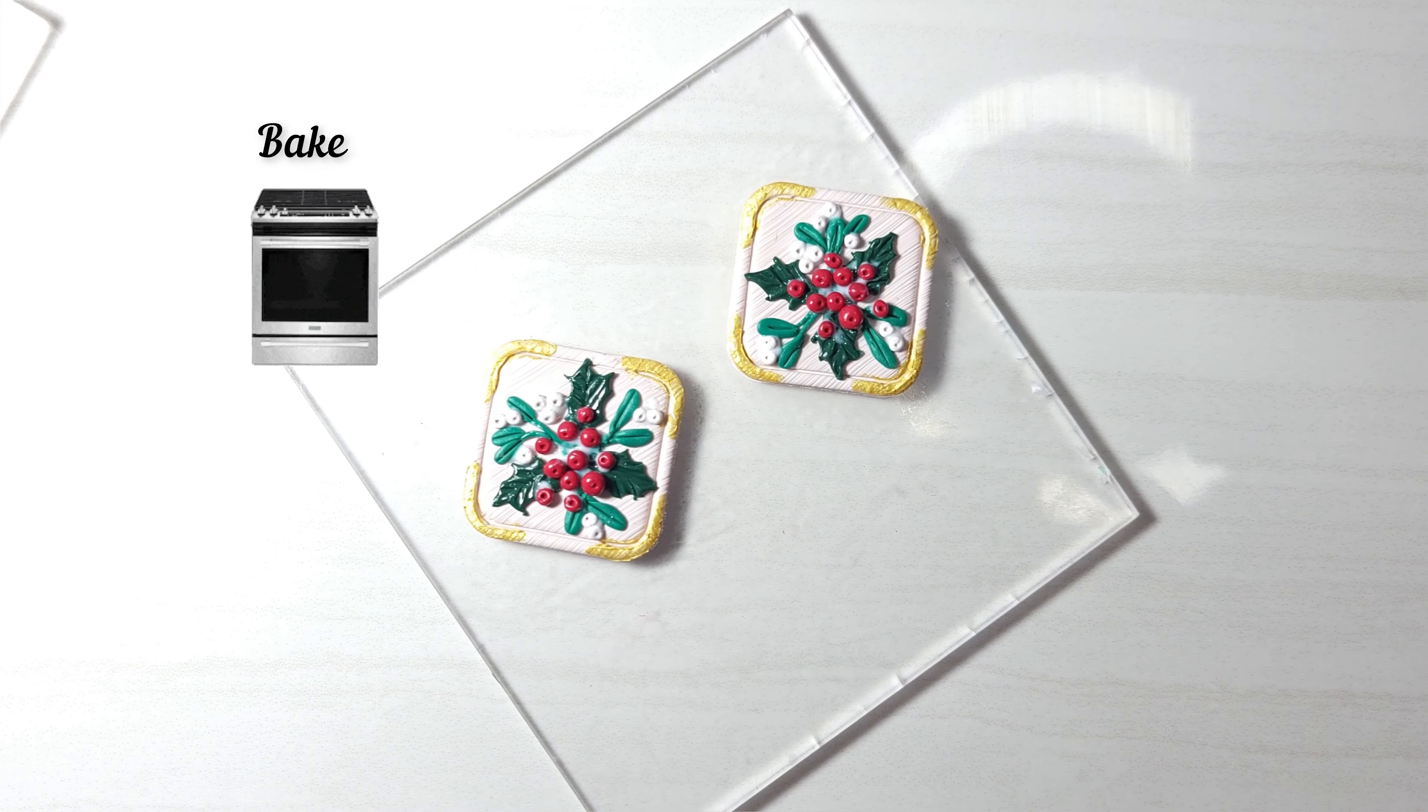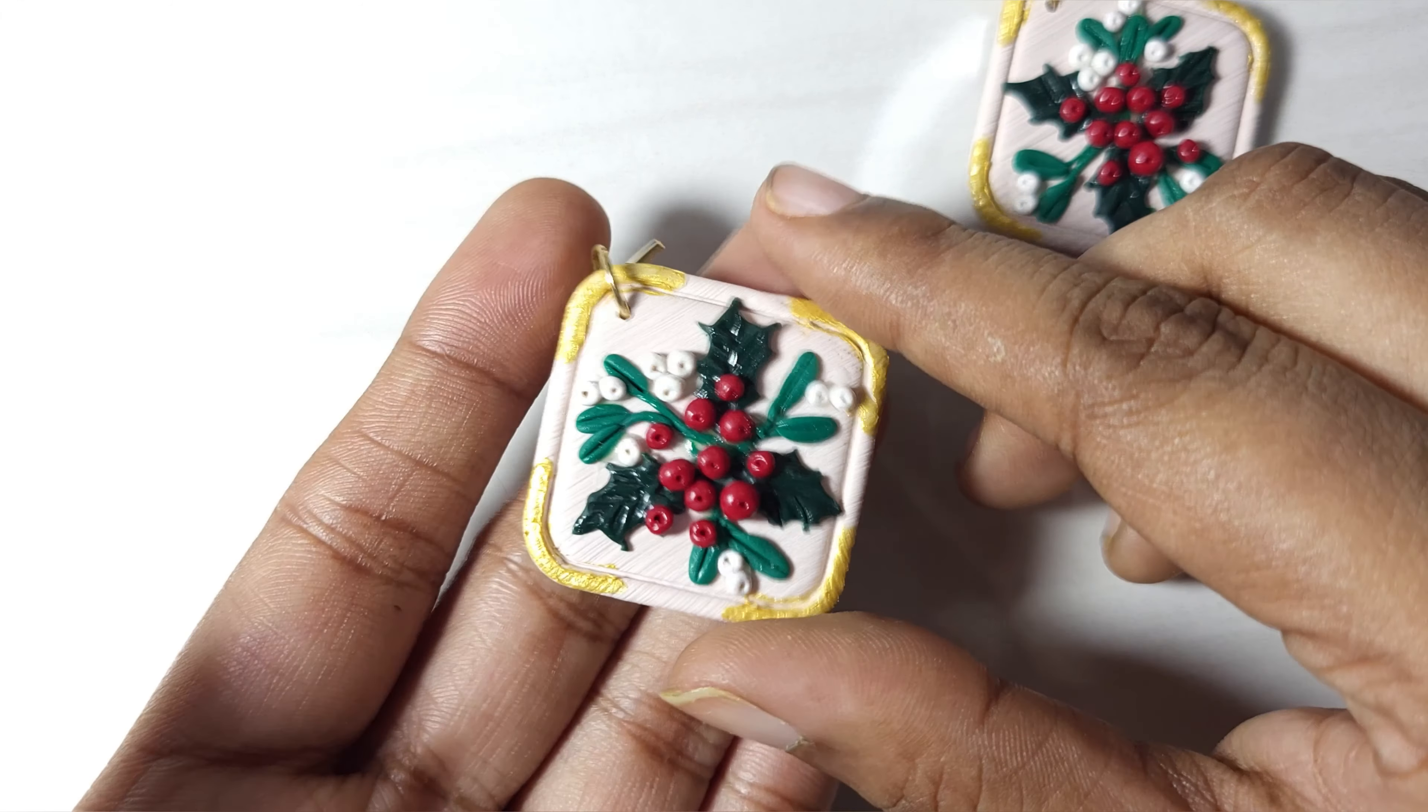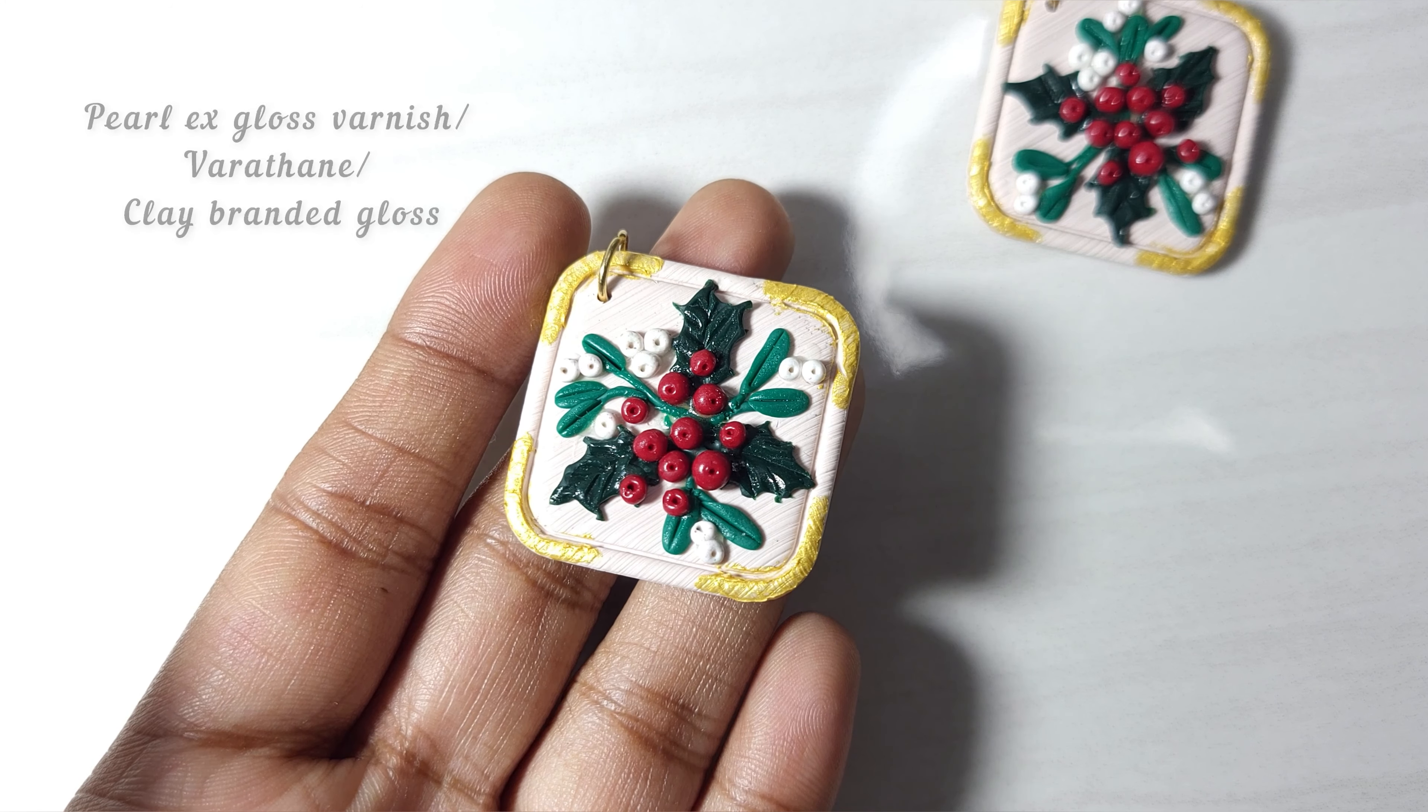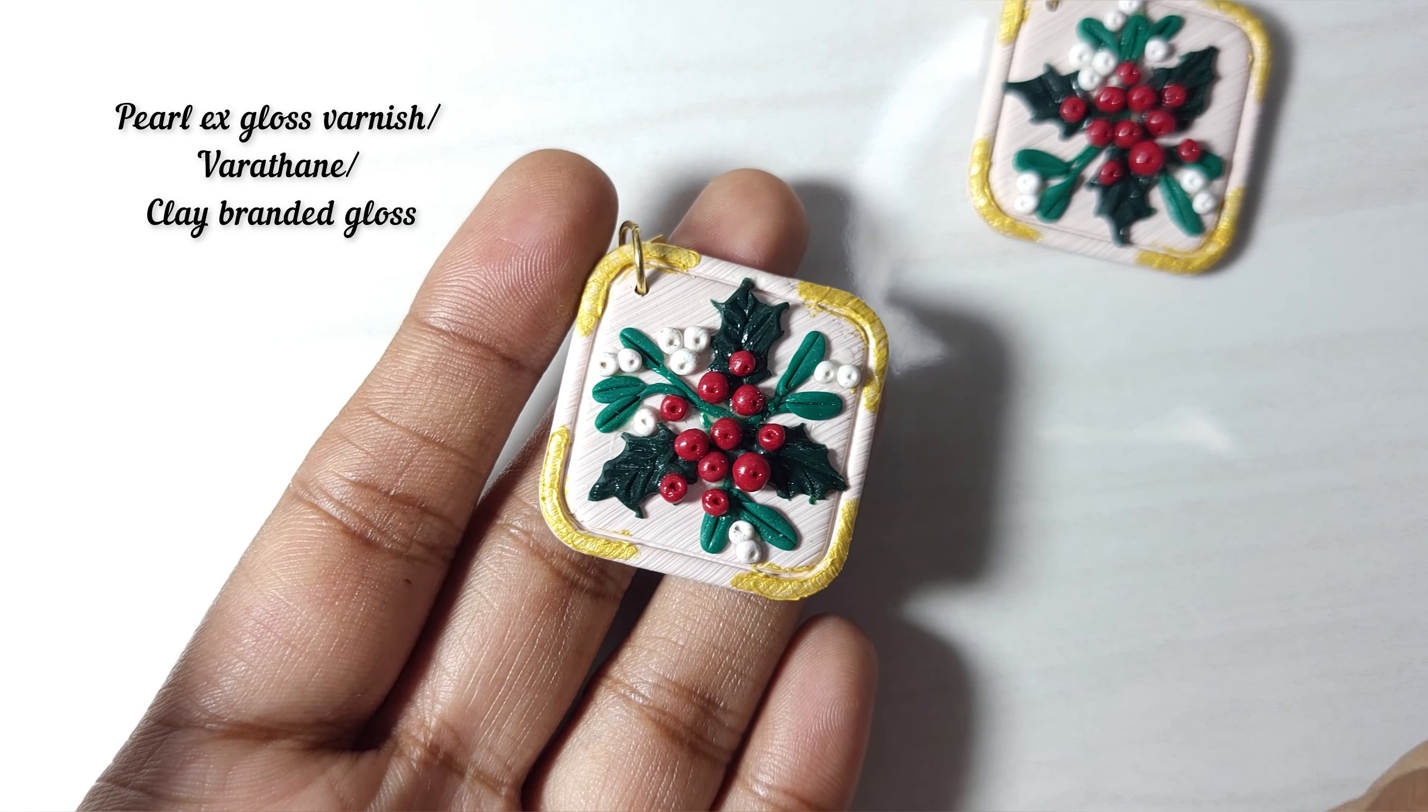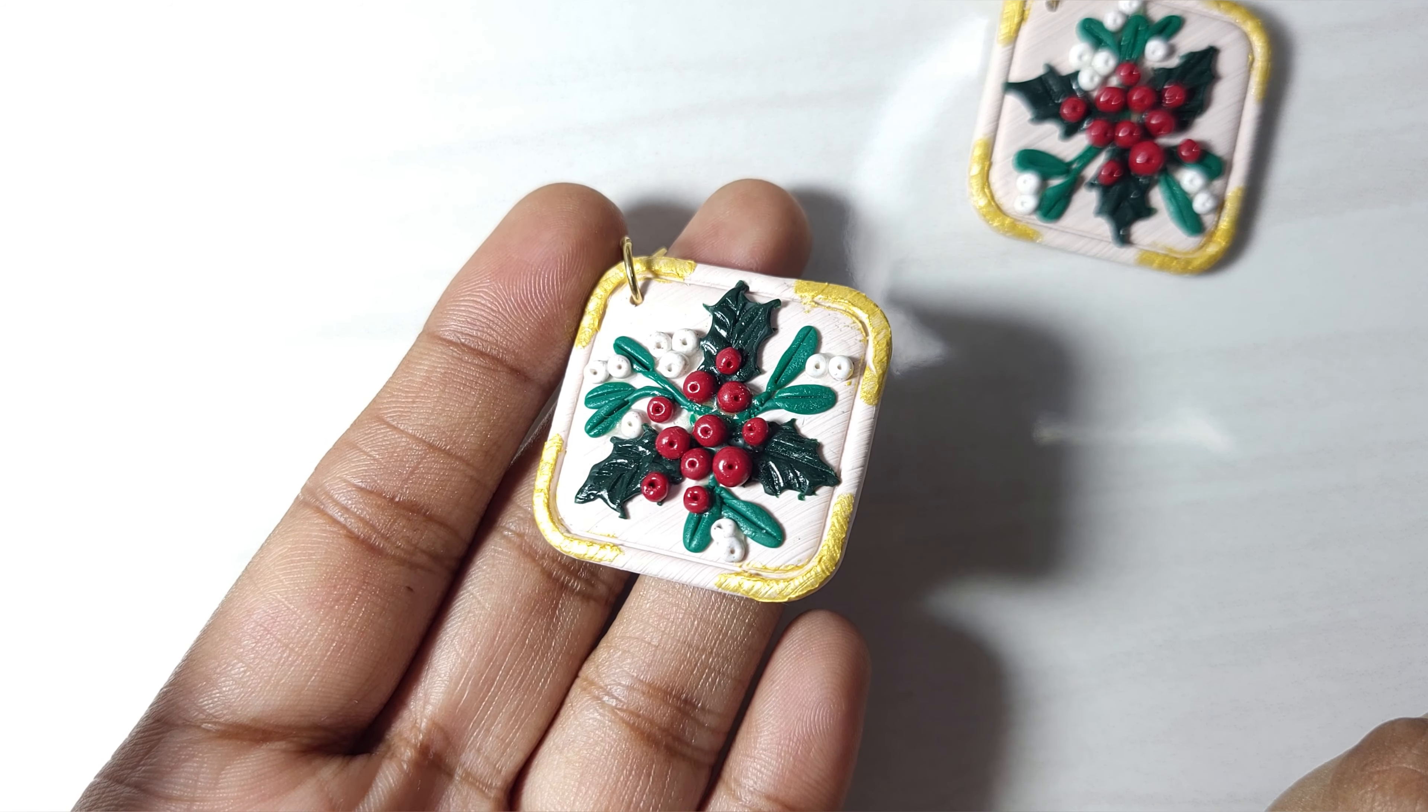Once done, bake as per clay manufacturer's instructions. This is the result. I coated gloss varnish on the berries and leaves because I like the waxy feel, and also I coated on the gold paint to seal it.